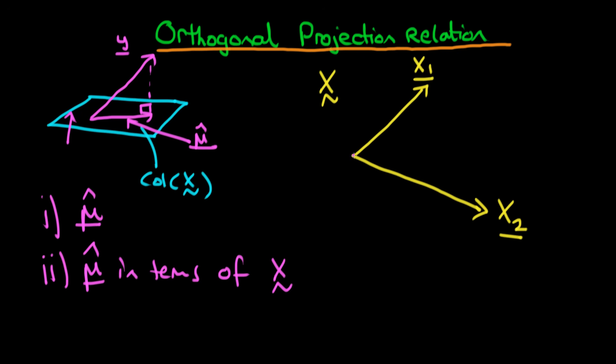The idea here is that we've already identified the vector mu hat, and now what we'd like to do is write this in terms of X1 and X2.